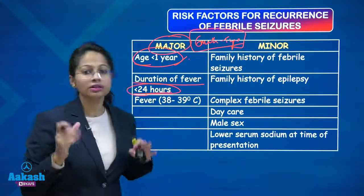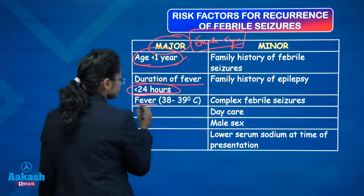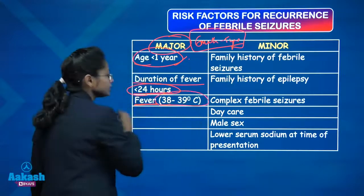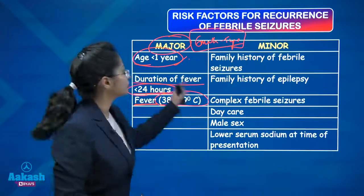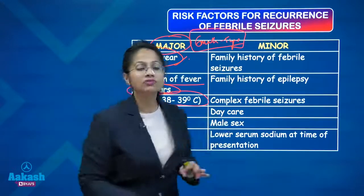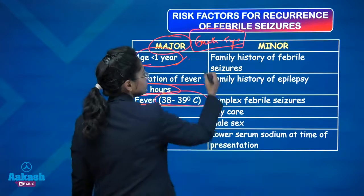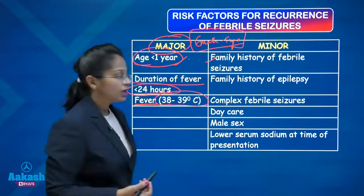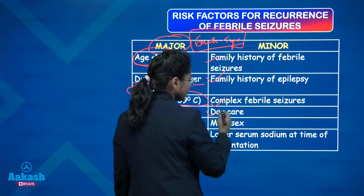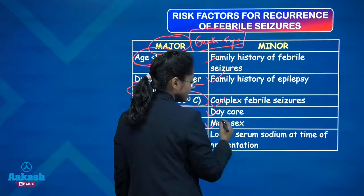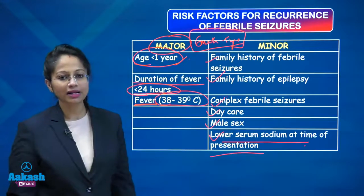Chances of recurrence of febrile seizure increase in these cases. A temperature of 38 to 39 degrees Celsius — if the child is having febrile seizures at such low temperatures — is again a major risk factor for recurrence. The minor factors are family history of febrile seizure, family history of epilepsy, complex febrile seizure, daycare, male sex, and low serum sodium at the time of presentation.